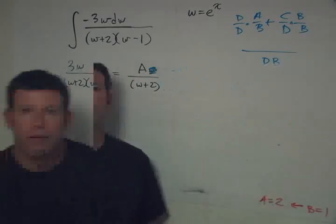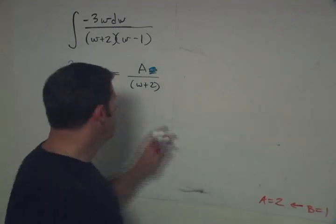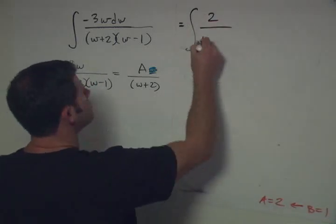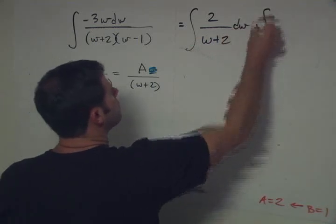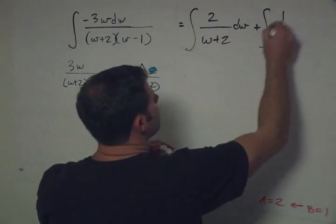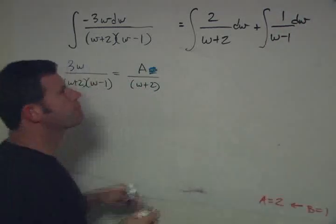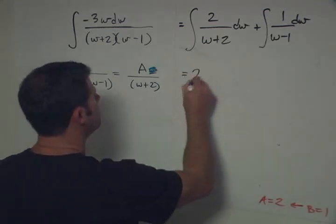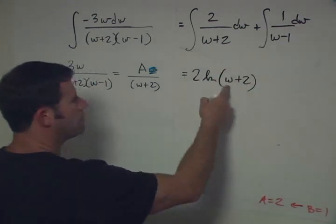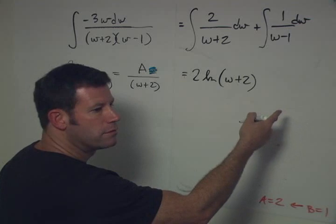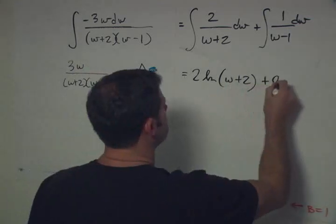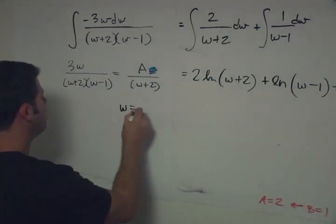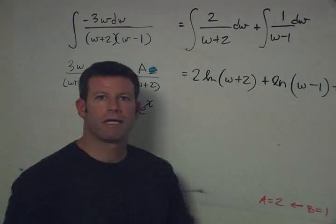Let me erase everything again. Okay, so now we're ready to solve it finally. We can say that this is equal to then the integral of 2 over w plus 2, dw, plus the integral of 1 over w minus 1, dw. And so each of these then becomes a logarithmic thing. So this is going to equal 2 ln of w plus 2, right? Because if u is w plus 2, du is 1, plus the ln of w minus 1, plus c. And now we just have to plug in our w, remember w was e^x. And then we have the second part of this problem.